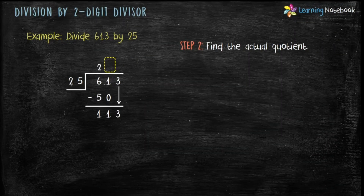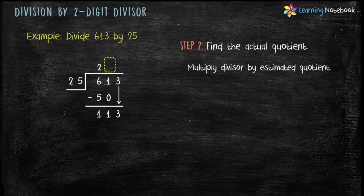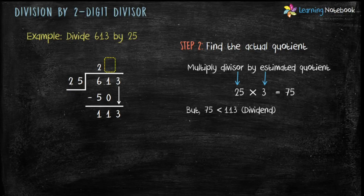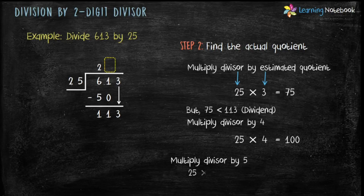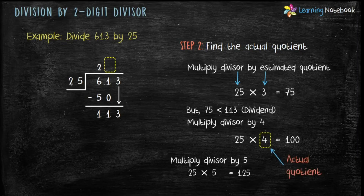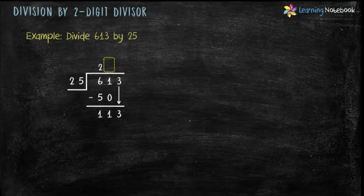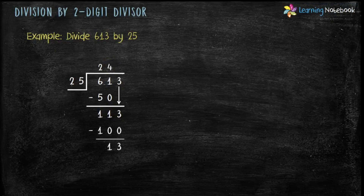Now step 2 is to find the actual quotient. Multiply divisor 25 by estimated quotient 3 and we get 75. But 75 is less than 113. So we multiply the divisor by 4. 25 into 4 equals 100. Again 100 is less than 113. So we try multiplying the divisor by 5. 25 into 5 equals 125. But 125 is greater than 113. So the actual quotient is 4. Let's continue with the long division. 25 into 4 equals 100, and 113 minus 100 equals 13. Therefore quotient equals 24 and remainder equals 13.